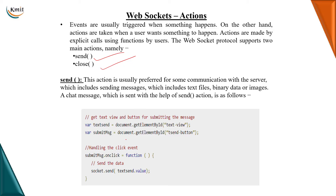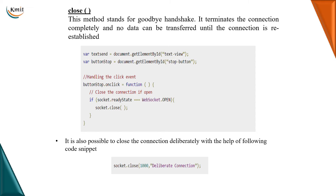Using the socket instance, we call socket.send to send data. We also have the close function, which is used for a goodbye handshake — it terminates the connection completely so that no data can be transferred until the connection is re-established, using socket.close.